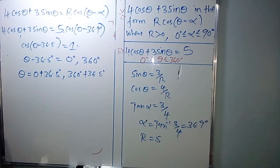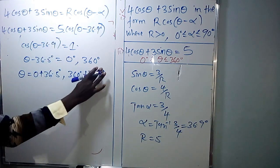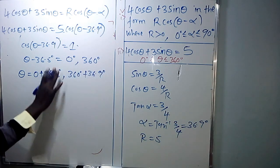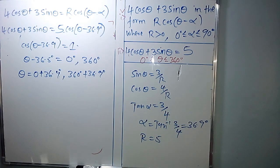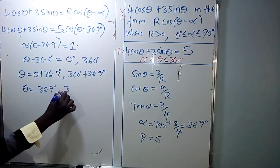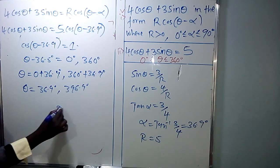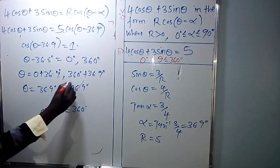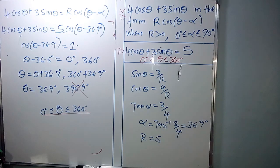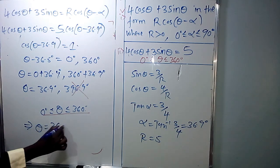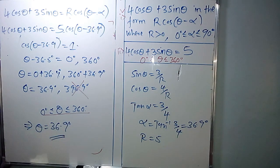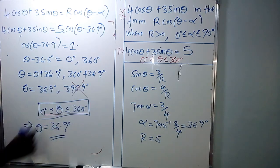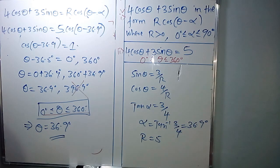Since they want theta, we add 36.9 degrees to both sides: theta is 0 plus 36.9 degrees or 360 plus 36.9 degrees, giving 36.9 degrees or 396.9 degrees. Since they only want values between 0 and 360 degrees, 396.9 is outside the range and is excluded. Therefore theta equals 36.9 degrees.